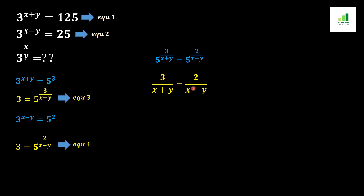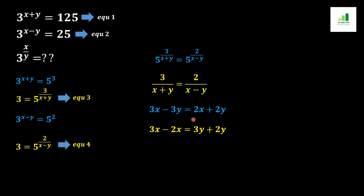In the next step, we cross multiply both fractions. Multiplying 3 by x minus y gives 3x minus 3y, and multiplying 2 by x plus y gives 2x plus 2y. Simplifying this linear equation, 2x moves to the left side becoming minus 2x, and minus 3y moves to the right side becoming positive 3y.